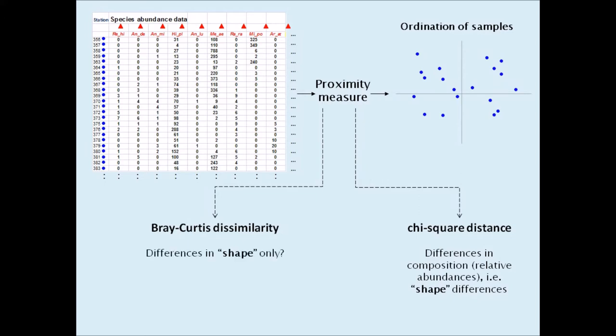Does it measure just shape differences, or does it include some information about the size differences between samples as well? Some authors say that it measures difference in species composition, but what does this really mean?